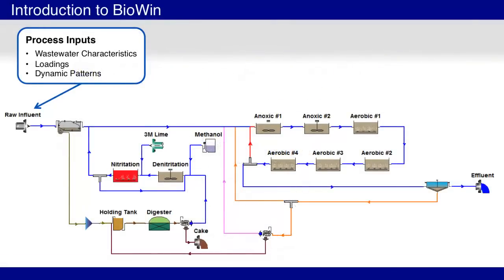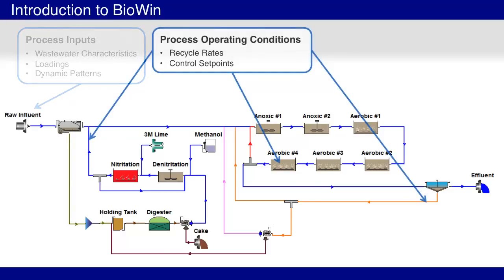To build a plant model, we need to import information into BioWin about plant inputs, such as loading and dynamic patterns. BioWin also requires information about the plant operating conditions, like recycle rates and control set points.